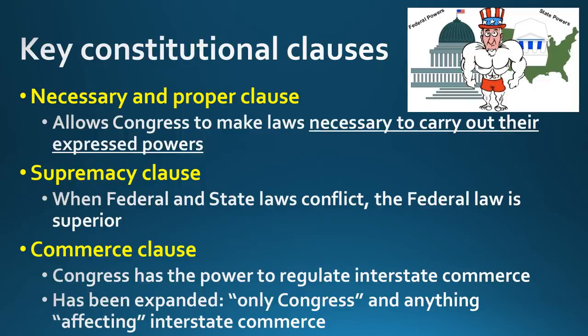Three of the biggest constitutional clauses you must know for the AP Gov exam: the Necessary and Proper Clause allows Congress to make laws that are necessary to carry out their expressed powers. This strengthens Congress — they can make laws about things that aren't directly expressed, giving them implied powers. There is a limit, though, because these laws do have to be related to their expressed powers.